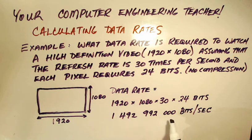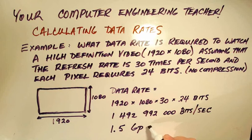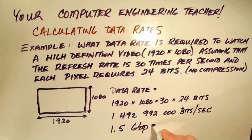So if I take this number and divide by a billion and I round, I will end up with 1.5 gigabits per second.